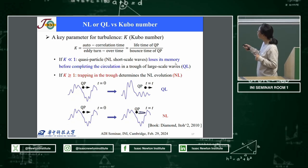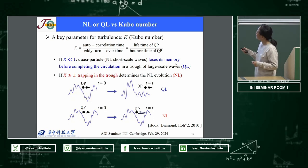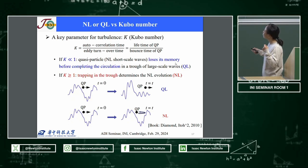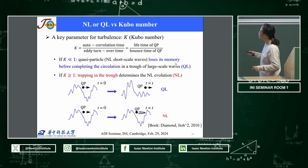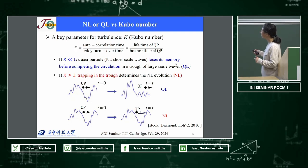Before going into detail, I will talk about the key parameter for turbulence, the Kubo number, defined as the ratio of the autocorrelation time to the ideal trapping time. If the Kubo number is much less than 1, the quasi-linear theory can be applied. But when the Kubo number is of order 1 or greater, quasi-particles will be trapped in the wave, and quasi-linear theory is not applicable — then we must use nonlinear theory.